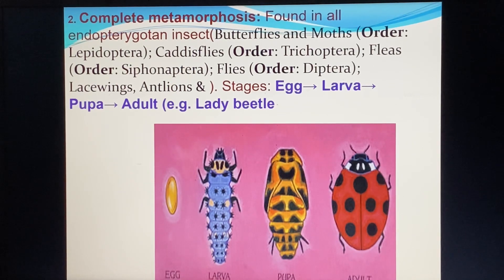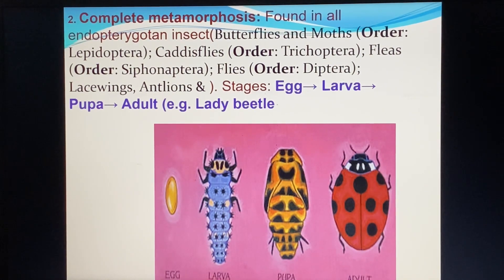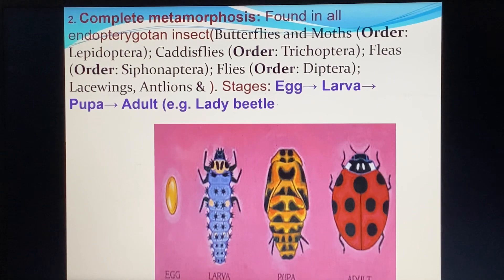The stages are: egg, larva, pupa, and adult. Here the larva and pupal stages are both present, so it is called complete metamorphosis. Four stages are found, so it is called complete metamorphosis.